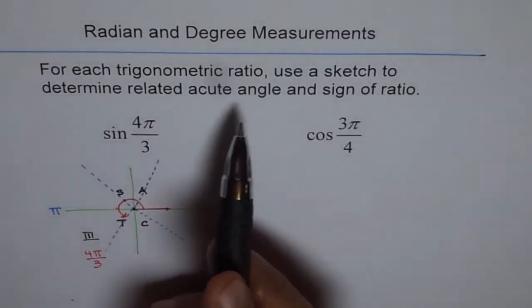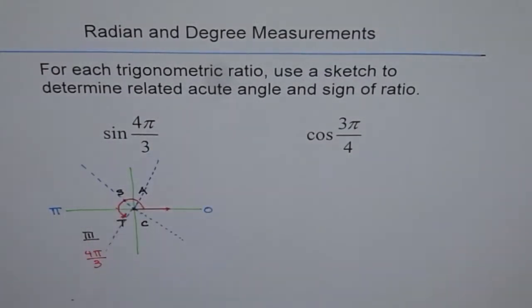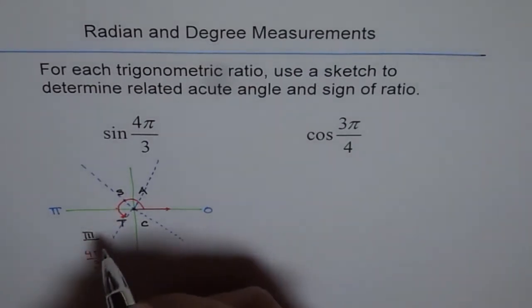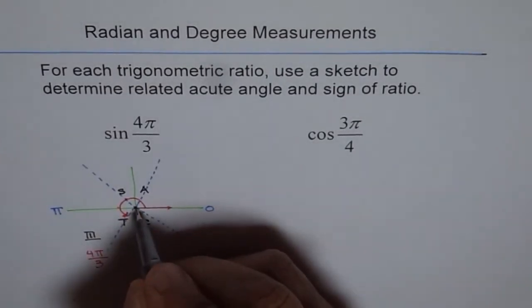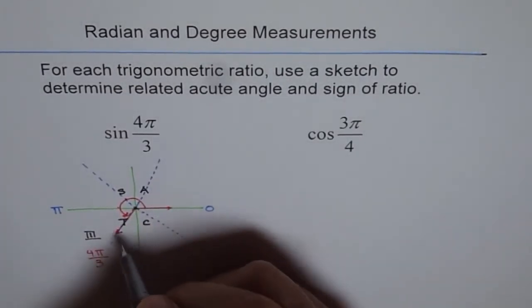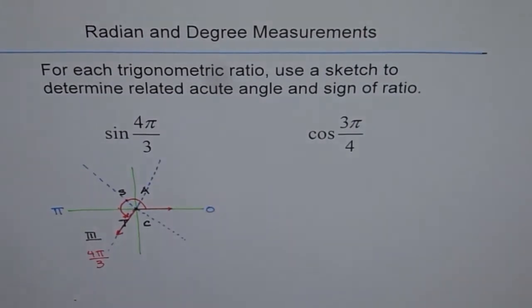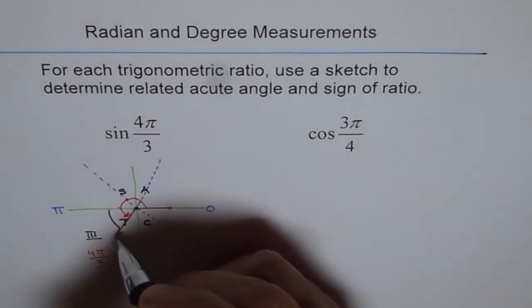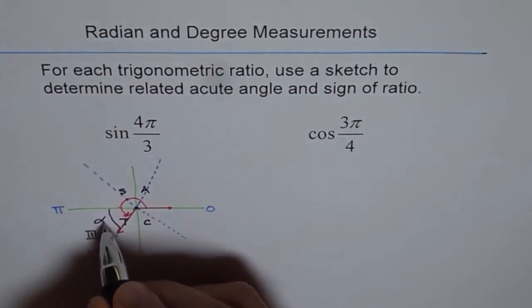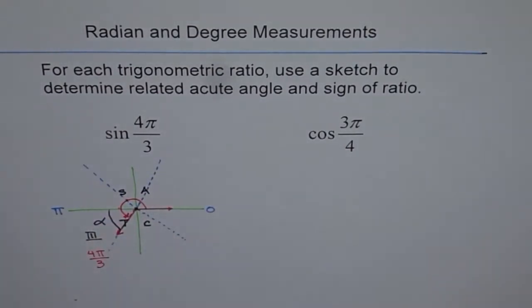Second, what is a related acute angle? How do you find the related acute angle? Related acute angle is always the angle which the terminal arm makes with the horizontal. So our terminal arm is here. Let me draw it. So how much angle does it make with the horizontal? The angle is this much. That is the related acute angle.